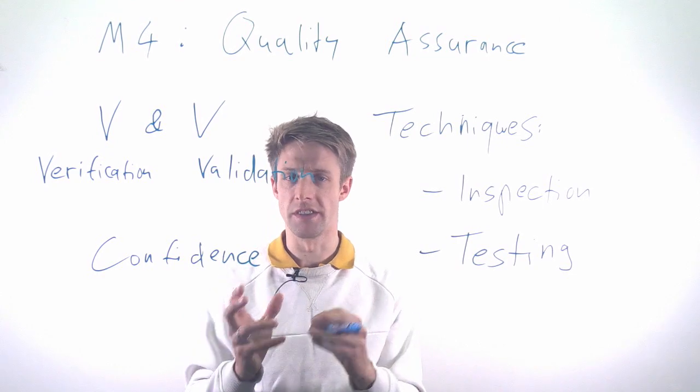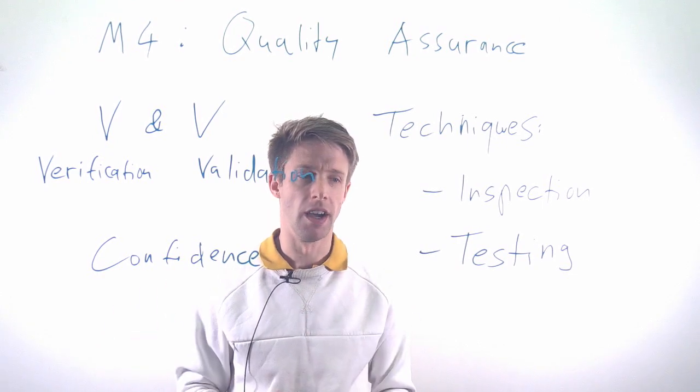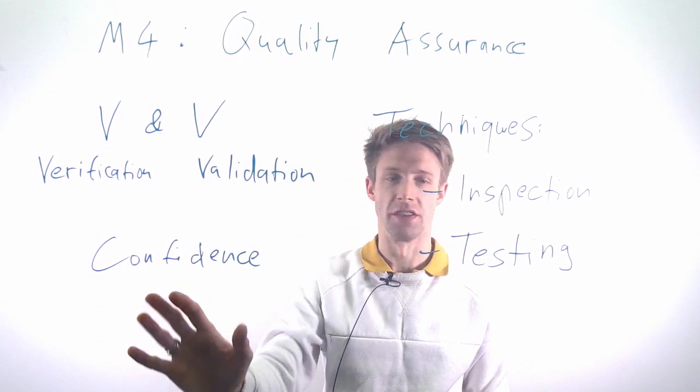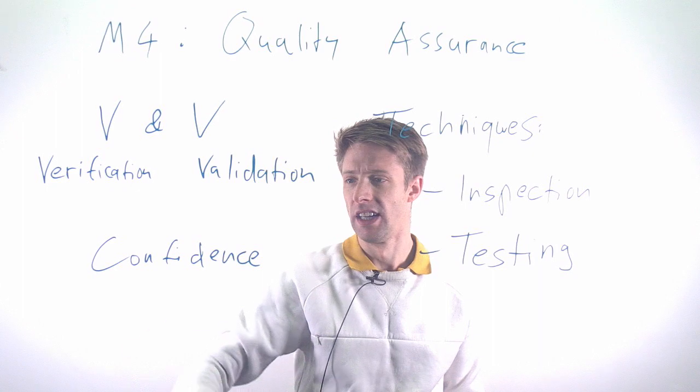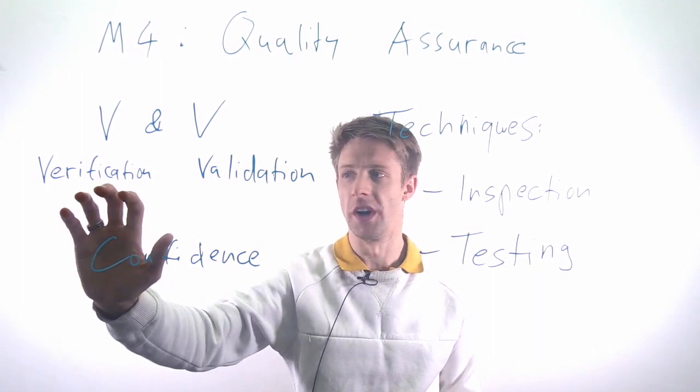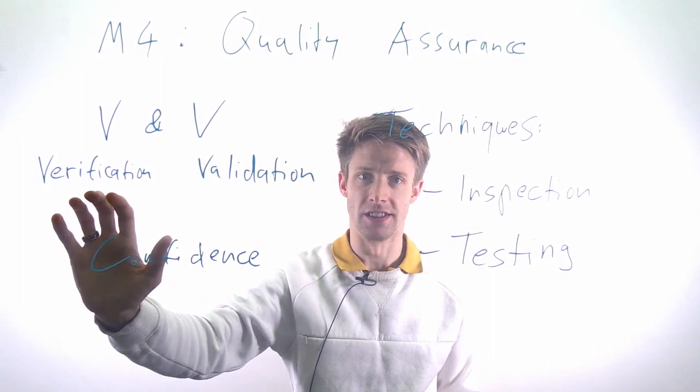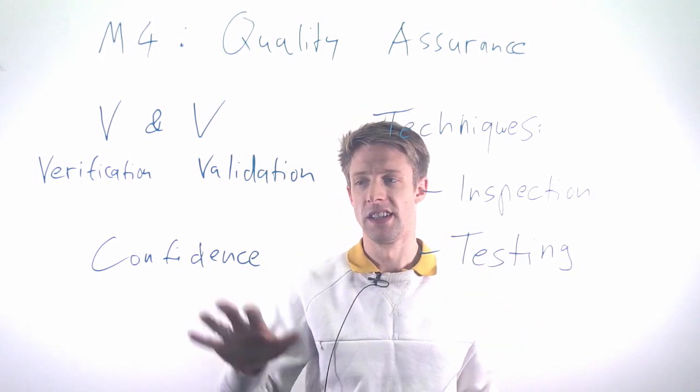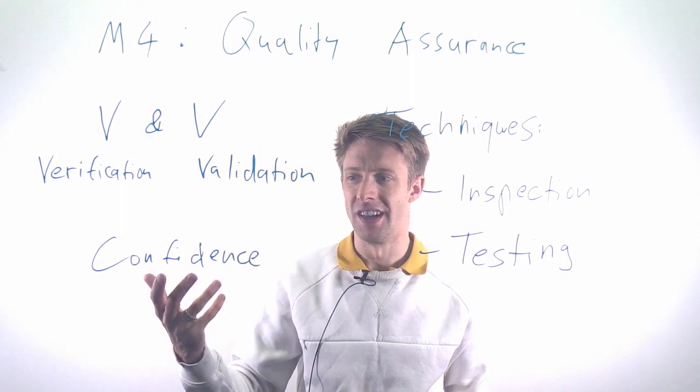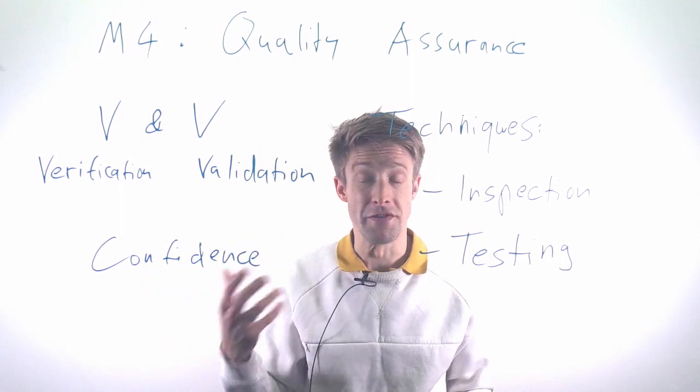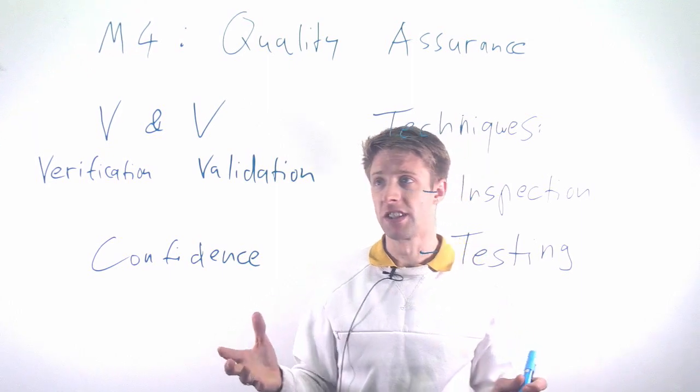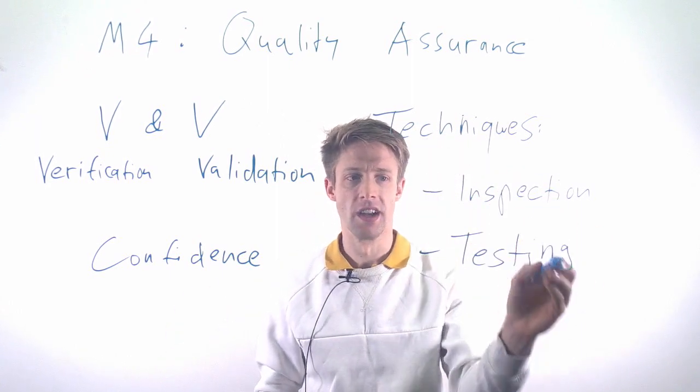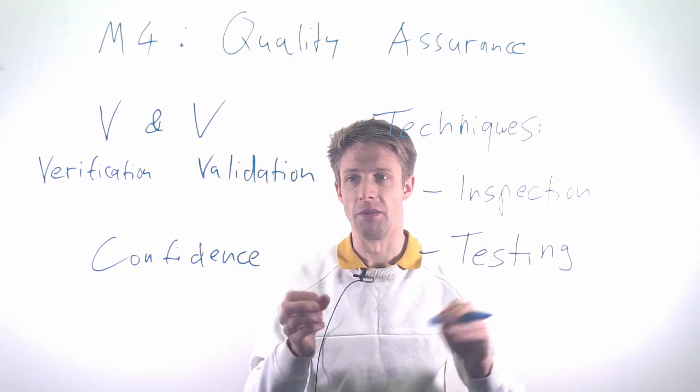And then we have what is known as testing, which is in contrast to inspection. So you actually execute the system, part of the system, or a prototype, and by that you try to establish this confidence. For example, you run an automated unit test to get confidence whether you have built a system the right way and the requirements are fulfilled, or you run a system test to have confidence that there are not many bugs. In the remainder of this module, we'll go into these different parts: we'll look at inspections a bit, we'll look at testing in much more depth, and we'll look at different techniques.